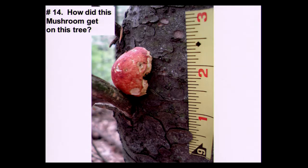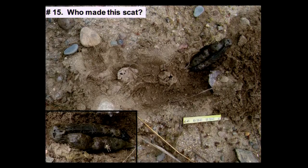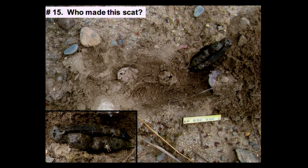How did this mushroom get on the side of this tree? This one you won't find on the island either, but it's a who-made-the-scat question. The quality of the image is a little dark. This is a scraped area — the animal came through and scraped this area with its back legs. This is a scat here. You might be able to find a similar species on the island that does something similar.